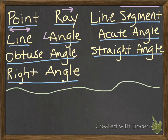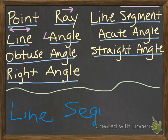How about another one: a part of a line that includes two points called endpoints and all the points in between them. If you're thinking line segment, you are correct — a part of a line with two endpoints and all the points between them.